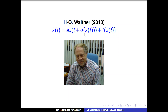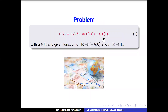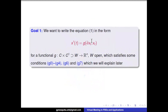We proved the linearized instability for these types of equations. I will talk about the techniques used to prove the linearized instability. Here again is the currency exchange problem that Walther formulated with the neutral term. In order to start, we would like to rewrite that equation in abstract form, and we would like G to satisfy certain conditions explained later.